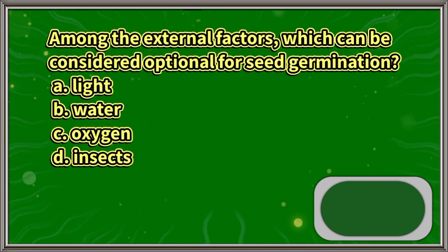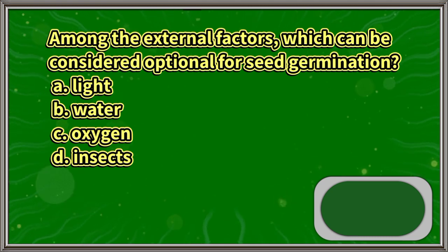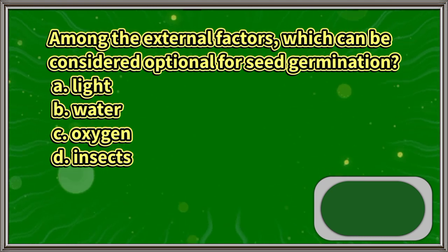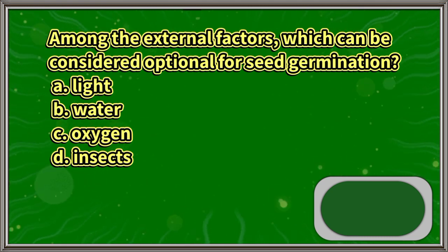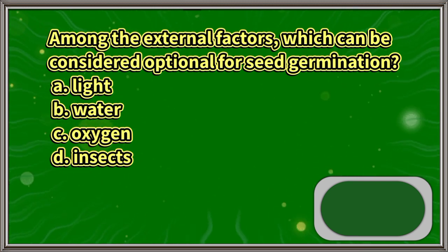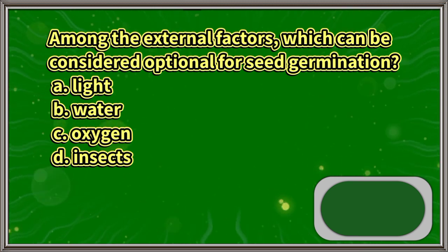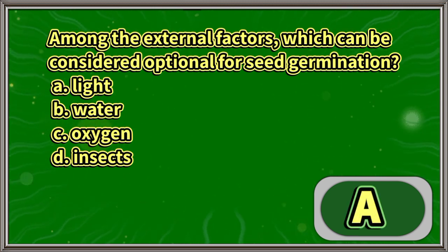Among the external factors which can be considered optional for seed germination: A. Light. B. Water. C. Oxygen. D. Insects. The answer is letter A.